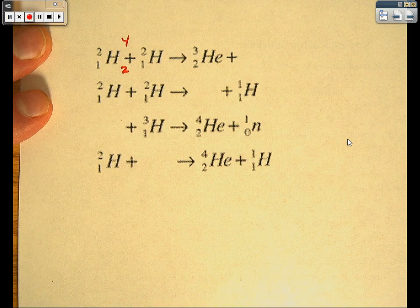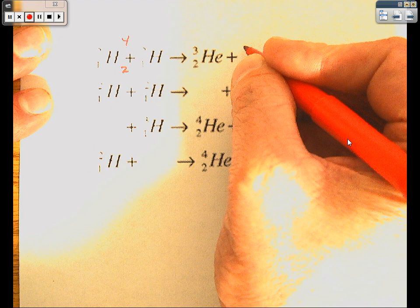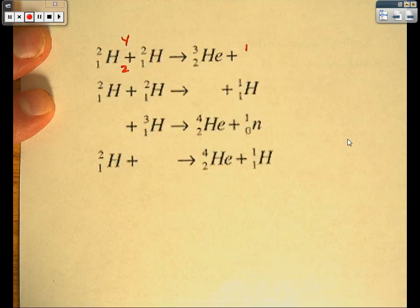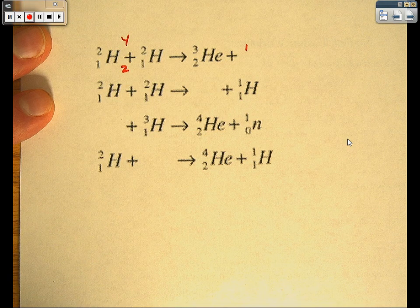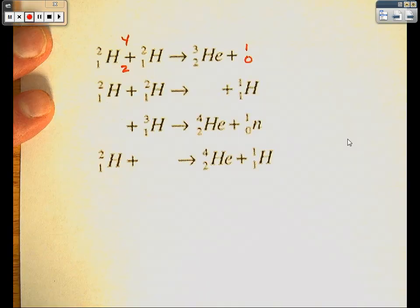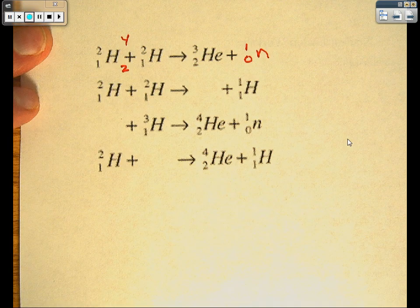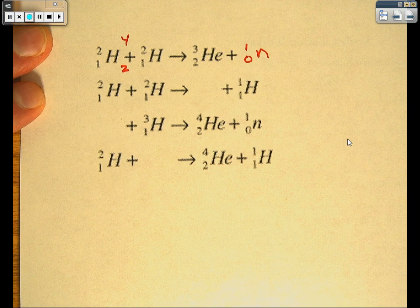1 plus 1 is 2. Subtract out what you have on the other side. So we're going to do 4 minus 3. We have a mass of 1 left on that second part. 2 minus 2 is 0. The only thing we have with a mass of 1 and an atomic number of 0 is the neutron to put there. This is producing a neutron.